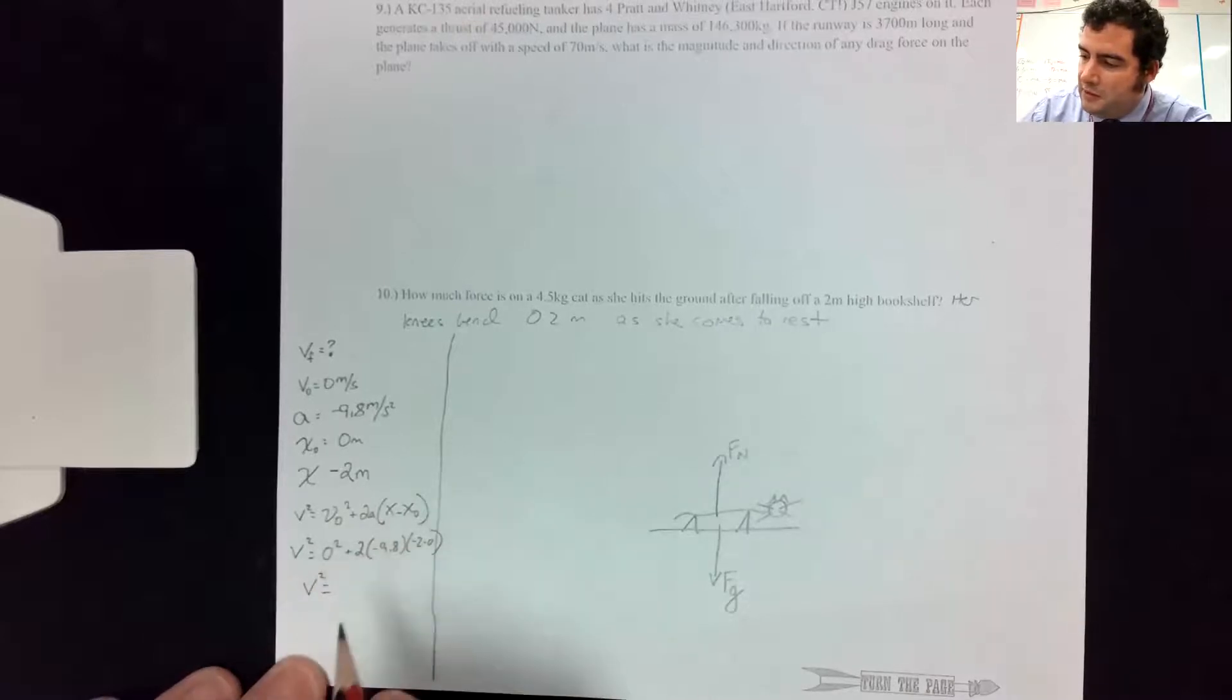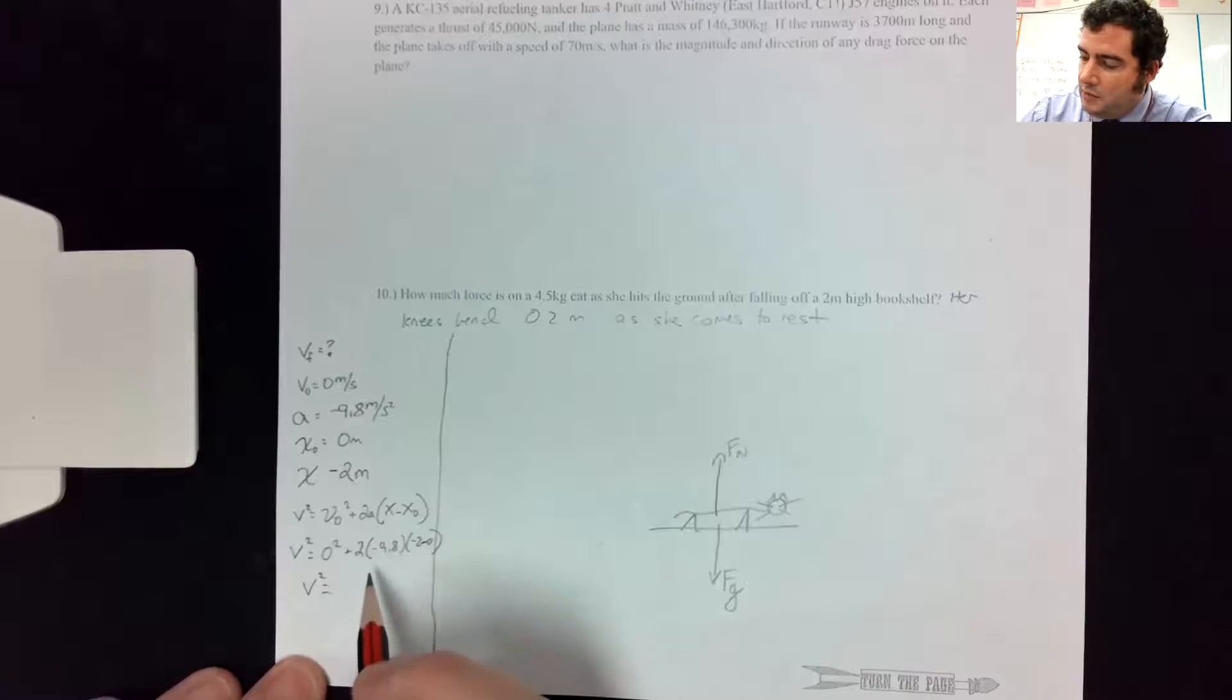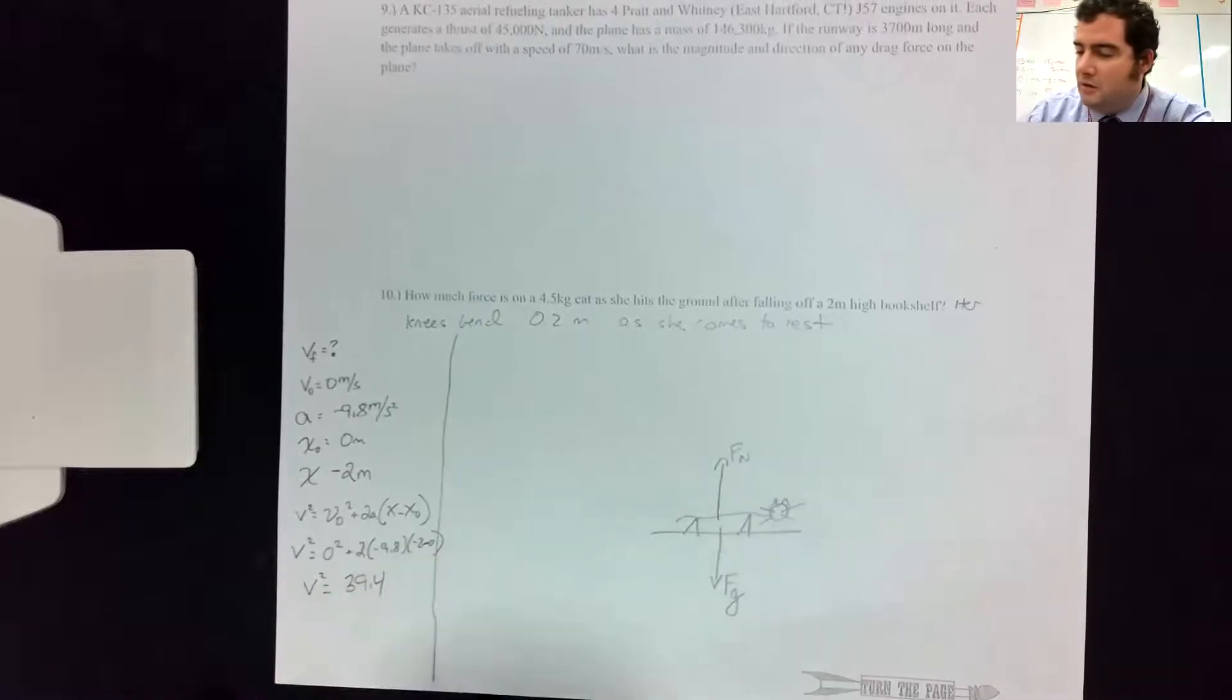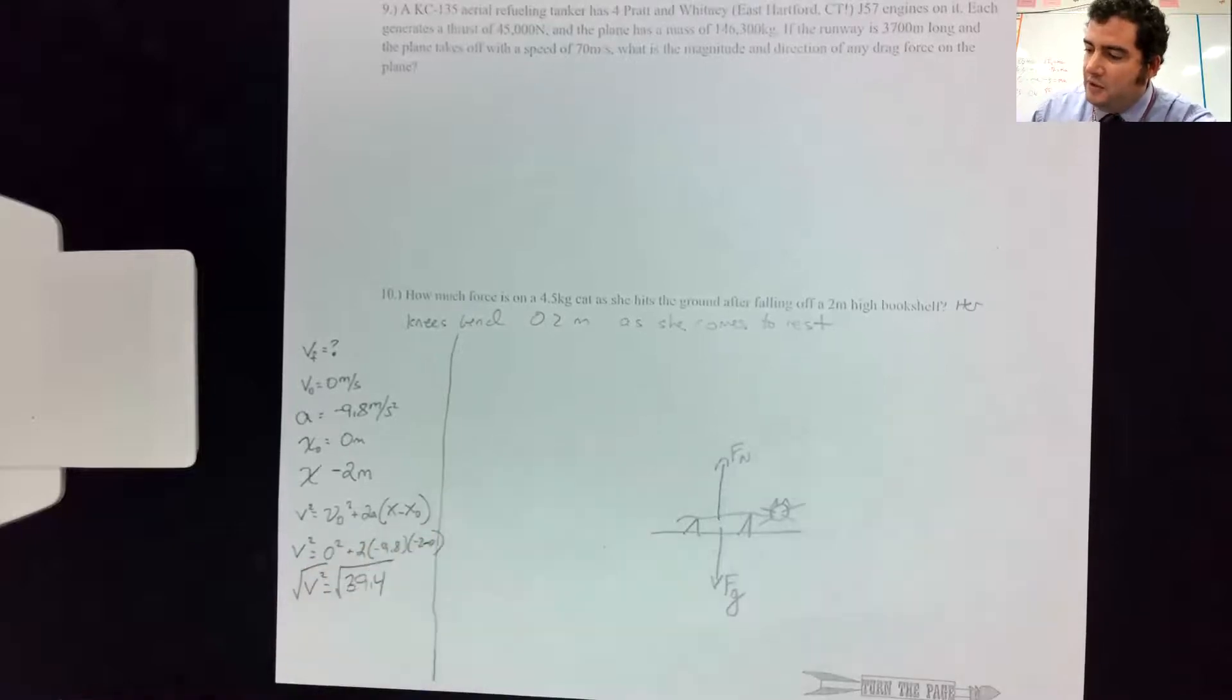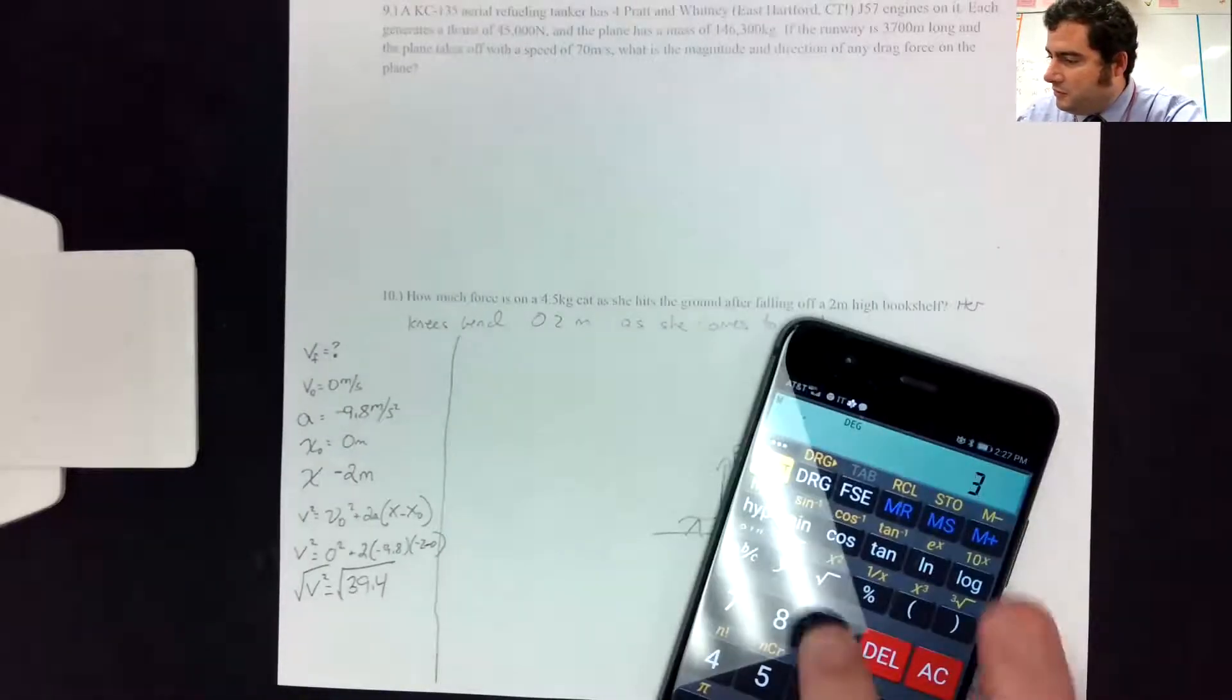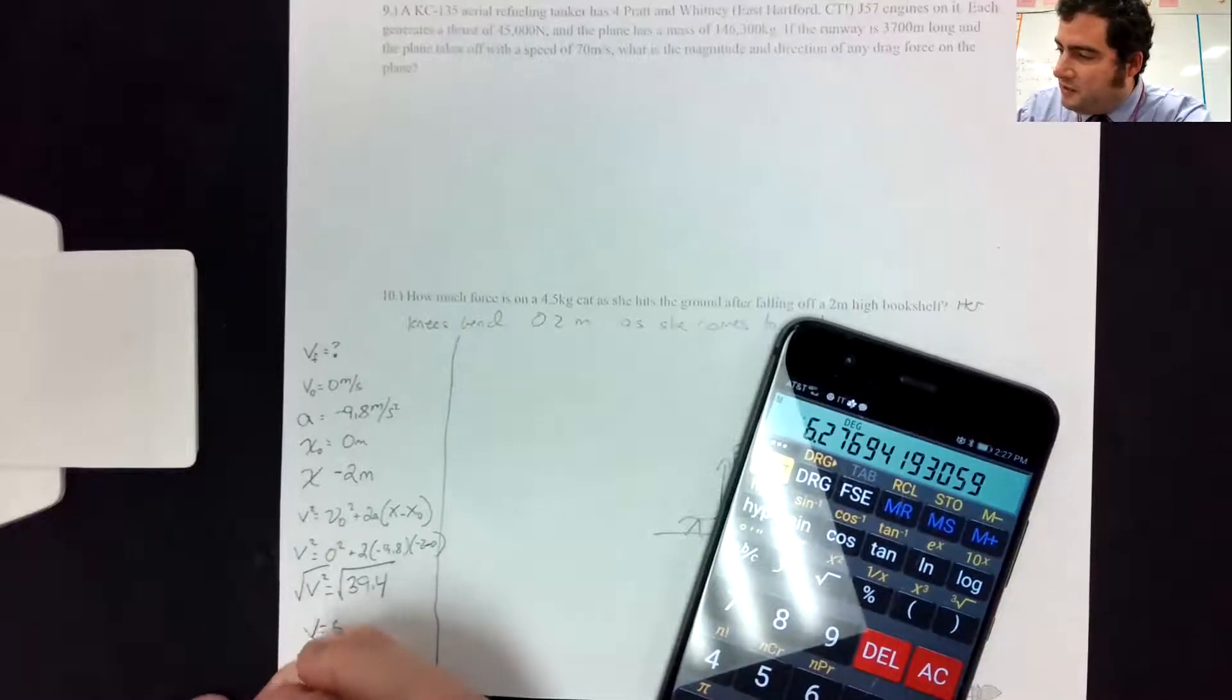So I'm just going to plug in and solve and see what I get for V. So V squared is 2 times minus 9.8 times minus 2. So that is 39.4, which I only know because I've done this several times. You think I would also have memorized what the square root of 39.4 is, but I didn't.